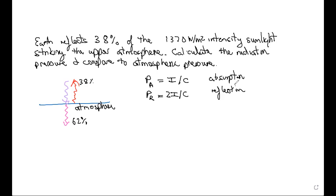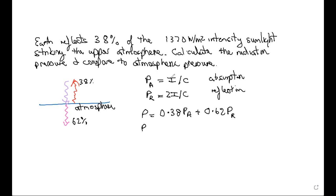So what's the total radiation pressure in our particular case? It's going to be a combination of the radiation pressures from both processes. It will be 38 percent (0.38) of the radiation pressure from the absorbed sunlight, plus 62 percent (0.62) of the radiation pressure due to the reflected sunlight. Then I can fill in the equations for the absorbed and reflected radiation pressures in terms of the intensities, pulling out common factors.